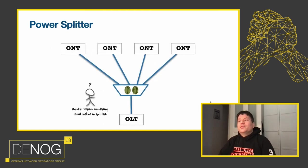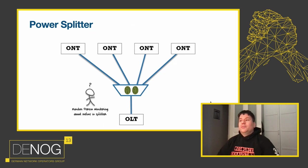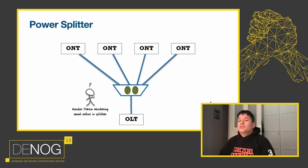The power splitter works exactly like this: you have four end-customer devices — those are the ONTs at the top — and the splitter in the middle. It's a power splitter that combines all of those towards the OLT. In the other direction, the light coming from the OLT side is sent out to all ONTs. This is the shared medium we're talking about.